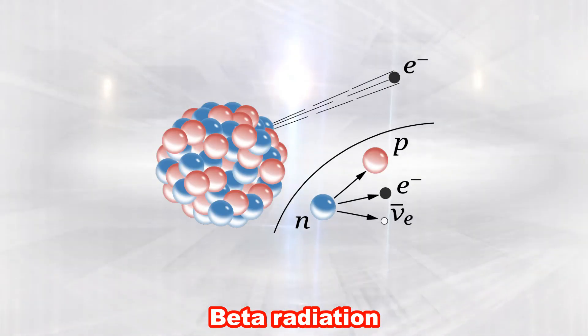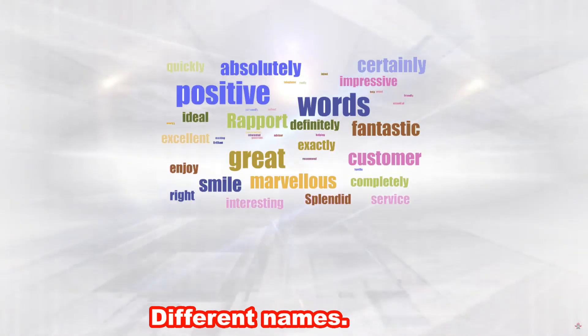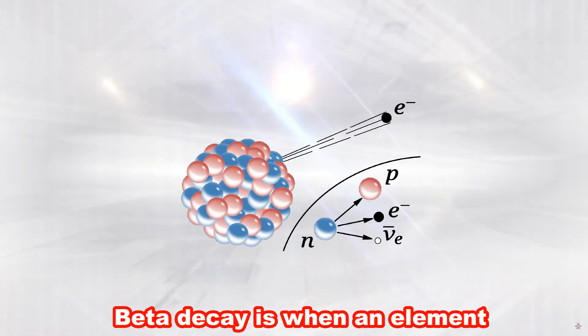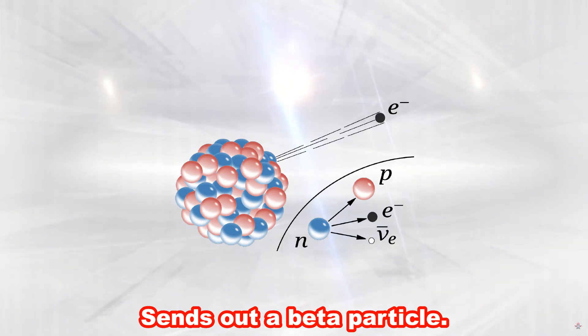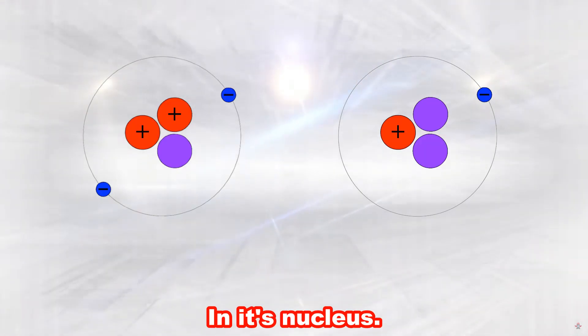Beta radiation. Like alpha radiation, beta radiation can have many different names. These are beta particle, beta ray or beta radiation. Also like alpha radiation, beta decay is when an element sends out a beta particle. Beta decay occurs when an atom has either too many protons or too many neutrons in its nucleus.